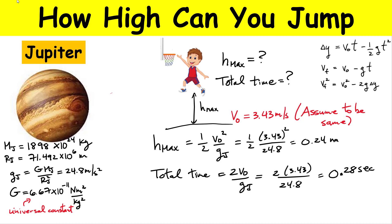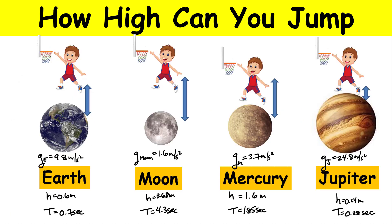Let's put everything in a chart to compare. Based on all the astronomical data, we calculated little g for each: Moon 1.6, Mercury 3.7, Jupiter 24.8. On Earth, our maximum height was 0.6 meters with a total flight time of about 0.7 seconds. If you want to jump the highest, clearly you want to go to the Moon — that's where little g is the smallest, with a total flight time of 4.3 seconds. Mercury is a little bit better than Earth. But the worst is the surface of Jupiter — only 0.24 meters, 24 centimeters, and only up in the air for about a third of a second. Not too much fun. Thanks for watching folks, hopefully you learned something.